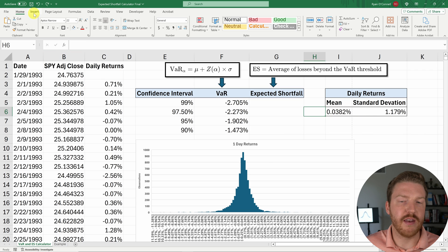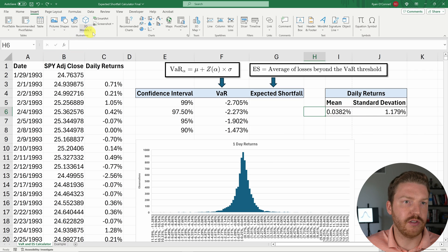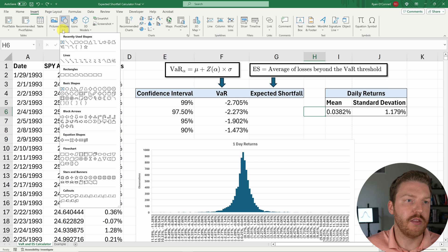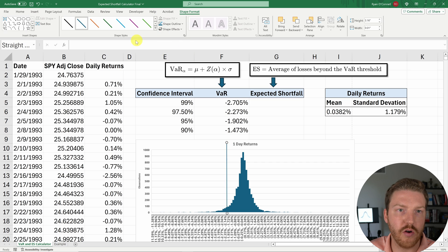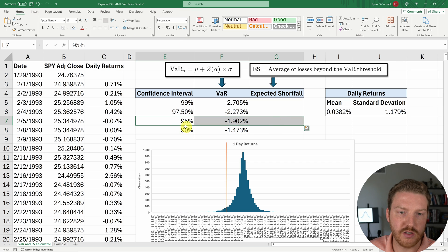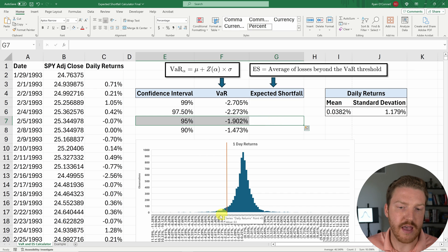Now sticking with that 95th percentile confidence interval, we can look at the distribution below and see that our VaR is about negative 1.9%, which I find about right in this bucket here. So for fun, I'm just going to draw a line right here. So this is basically our VaR, this 95th percentile VaR value. And our expected shortfall for that same VaR is going to basically be the average of everything to the left of this line.